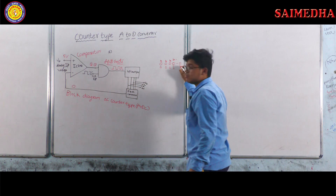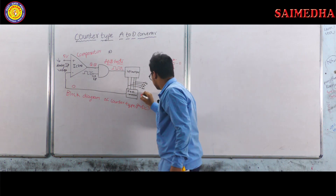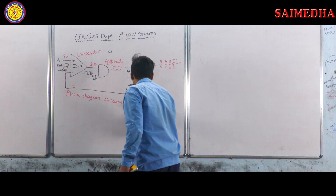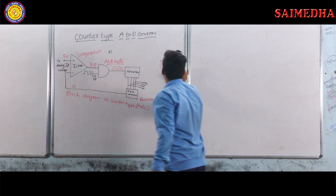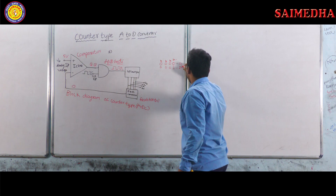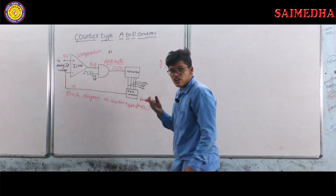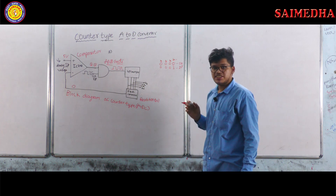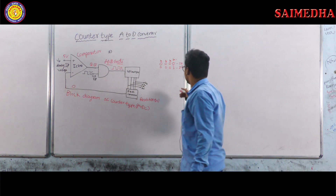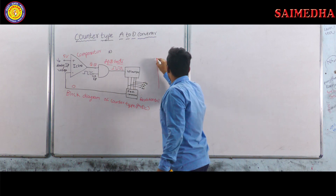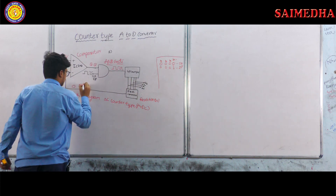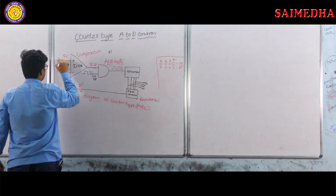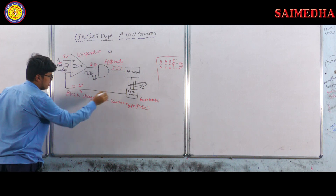Initially the output is zero volts, and here the resolution is one volt. The resolution is defined as the change in analog output voltage with a one-bit change in the LSB of the digital input data. So with the counter at 001, the D to A converter produces one volt.